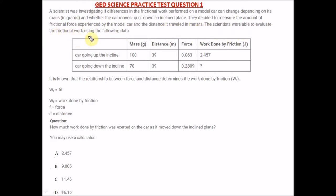The scientists were able to evaluate the frictional work using the following data. So we have this table here with the first row showing mass, distance, force, and work done by friction in joules. This says car going up inclined plane. The first column is for the mass, second distance, then force.